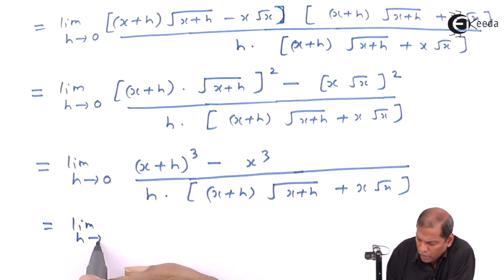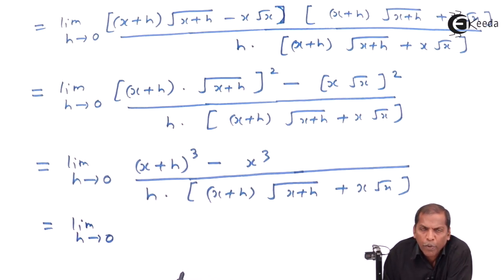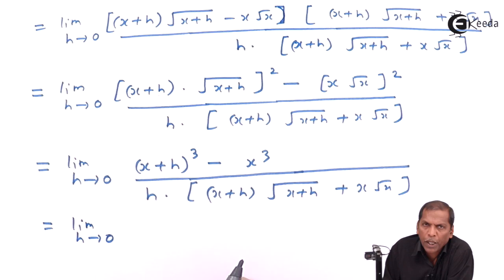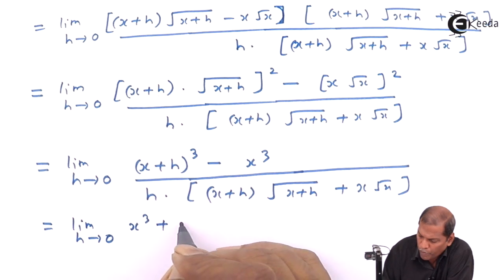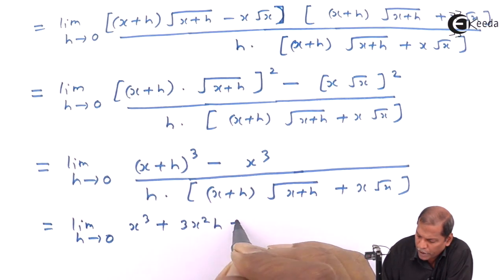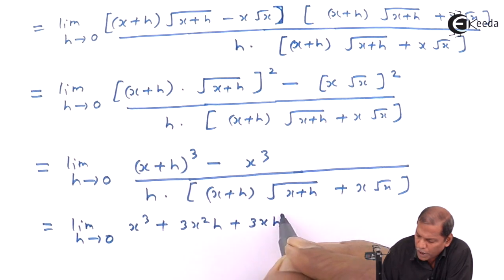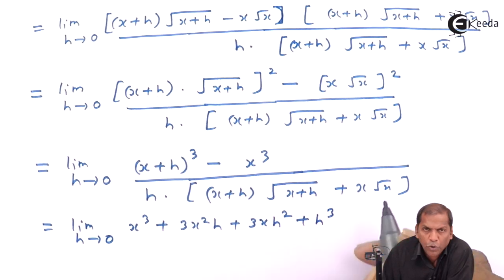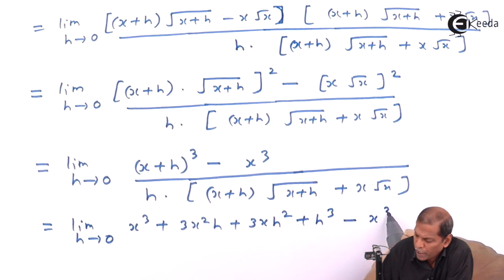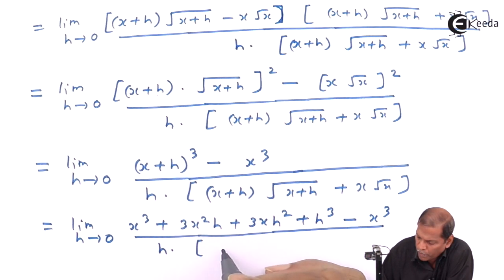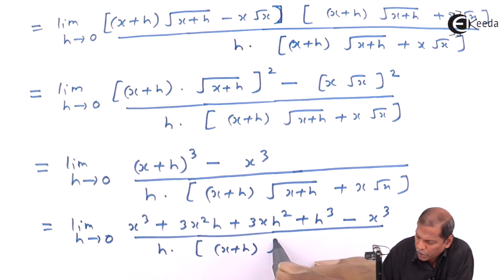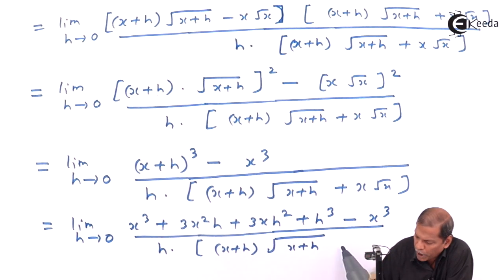Now in the numerator we apply the formula (a+b)³ = a³ + 3a²b + 3ab² + b³. So (x+h)³ expands to x³ + 3x²h + 3xh² + h³, and then minus x³. This is all divided by h into [(x+h) into square root of (x+h) plus x root x].